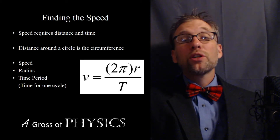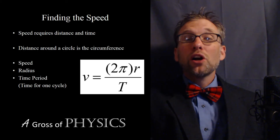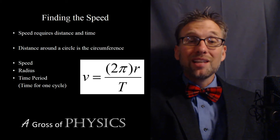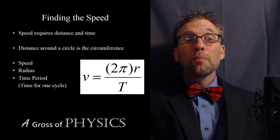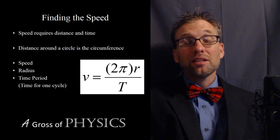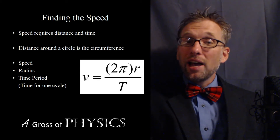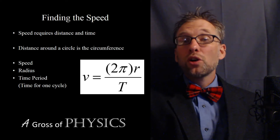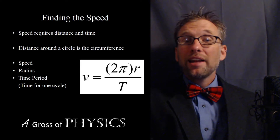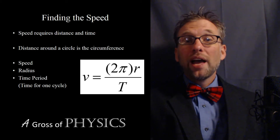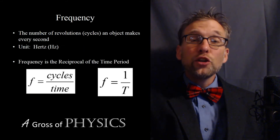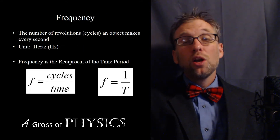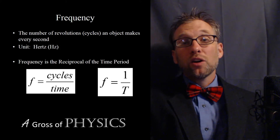When talking about circular motion, we're talking about cyclic motion — it happens in cycles. We use the term 'time period' to represent the time it takes to make one oscillation around the circle. We also have a new term called frequency, which is cycles per second, measured in hertz.